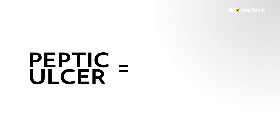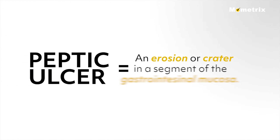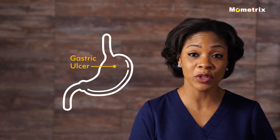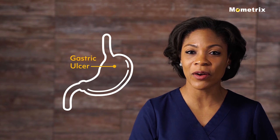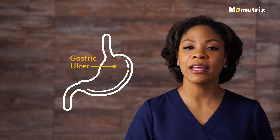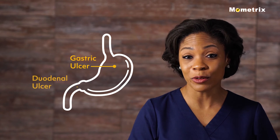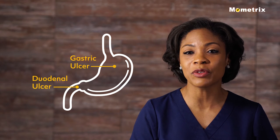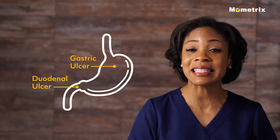A peptic ulcer is an erosion or crater in the segment of the GI mucosa. There are two types of peptic ulcers: a gastric ulcer occurring in the stomach and a duodenal ulcer occurring in the first few centimeters of the duodenum.